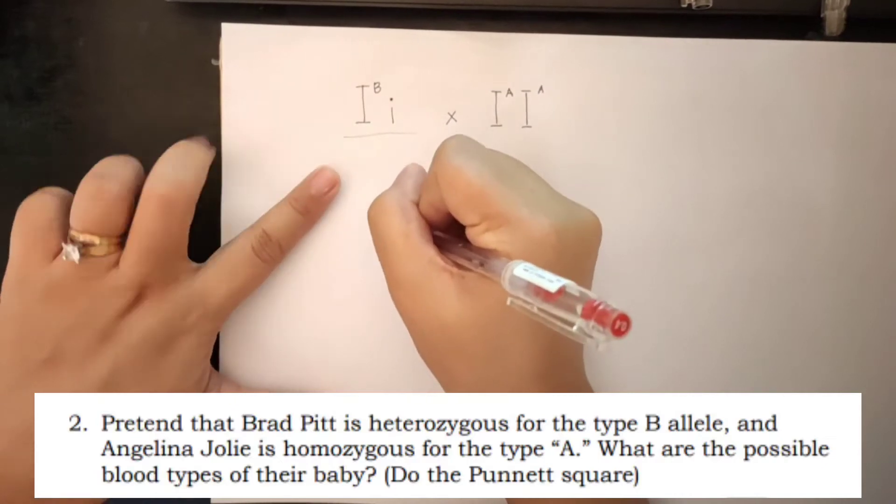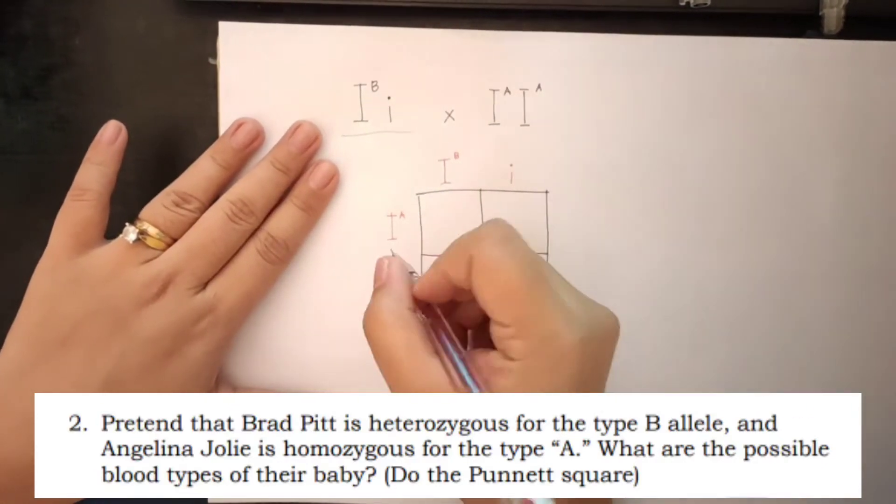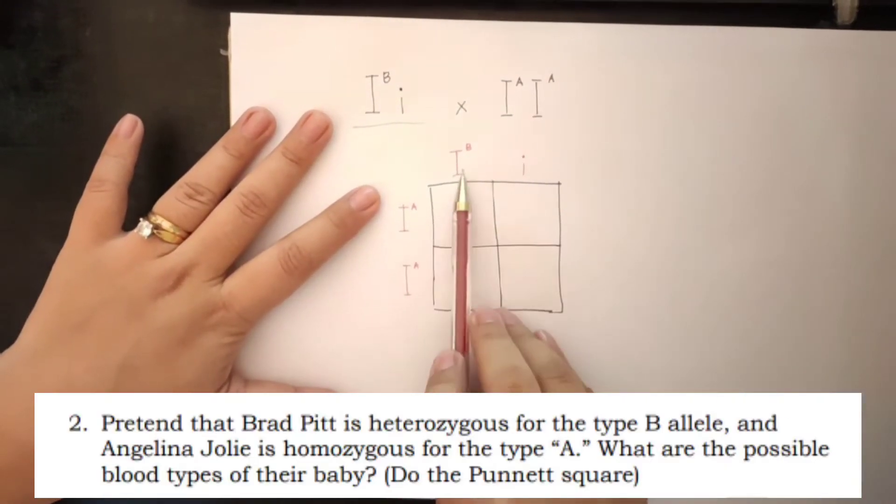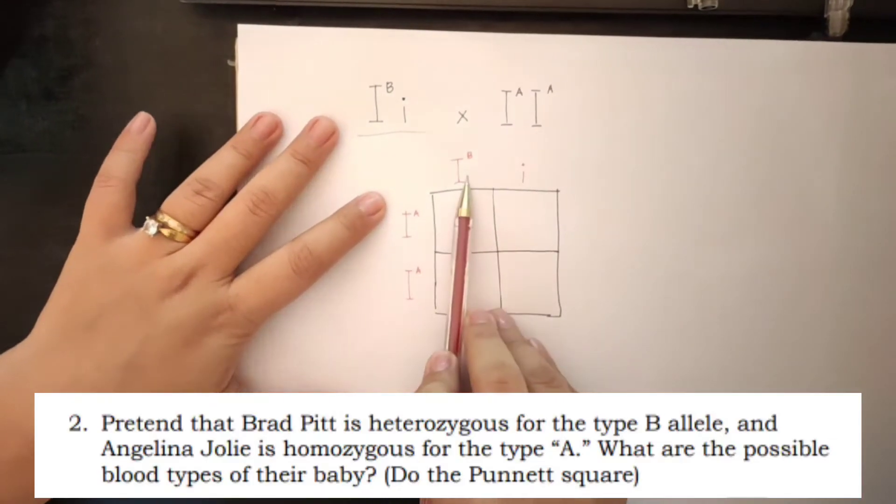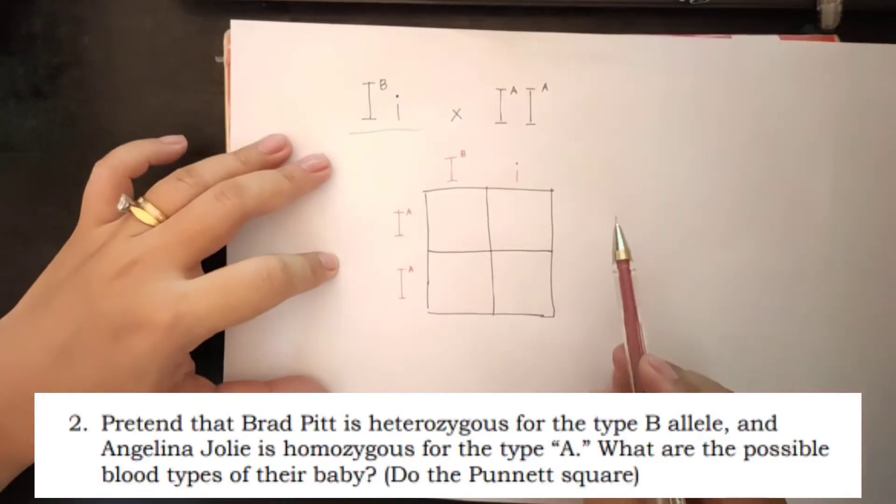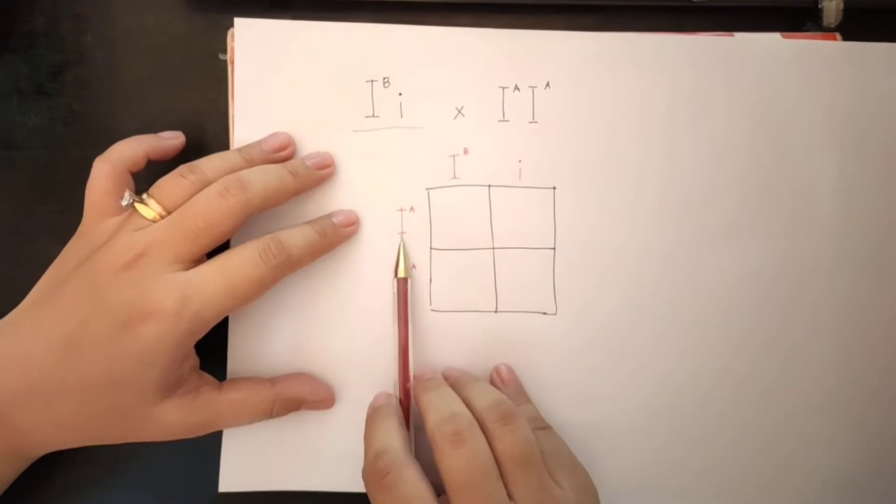So, heterozygous blood type A. Ano? Homozygous blood type A. That one. So, we are going to cross now the mother and the father or the parent's allele. So, we will start with this one.